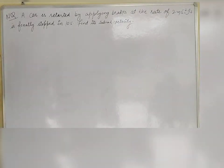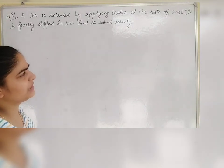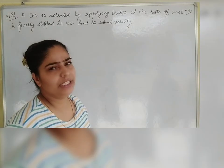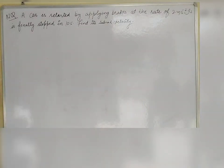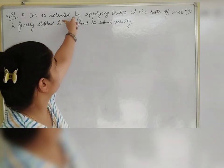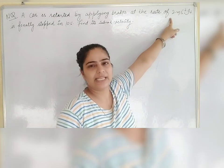It is a very easy question. A car is retarded by applying brakes at the rate of 2 meters per second square. It finally stopped in 10 seconds. Find its initial velocity. Because the car has brakes applied, it is retarded. The acceleration is retarded by the brake. It is negative 2 meters per second square.